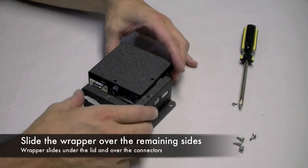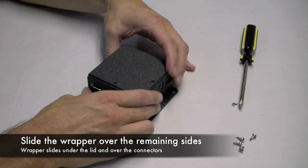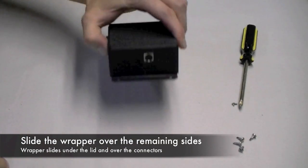After that, take the wrapper, slide it underneath the lid and it almost snaps into place.